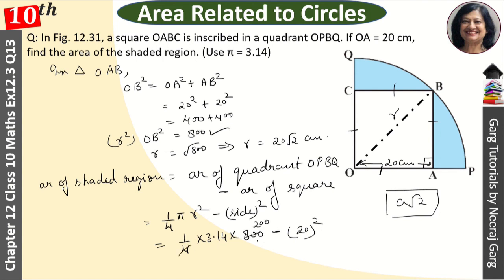When we multiply 3.14 by 200, this becomes 628 minus 400. That is equal to 228 cm square. This is our answer.